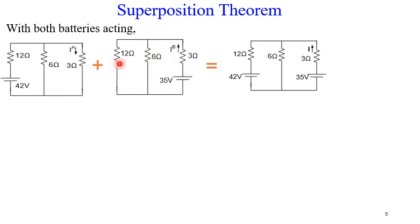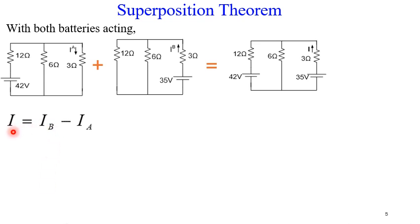Now for the tricky part — adding them. Looking at the current directions: in the first circuit the current was going anticlockwise, and in the second circuit it is also going anticlockwise but in the opposite direction to IA. So we negate IA. The total current I equals IB minus IA, which is 5 minus 2, giving us 3 amps. That is how we solve these questions.